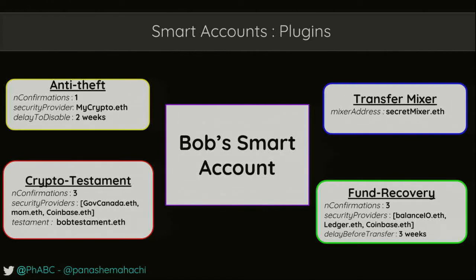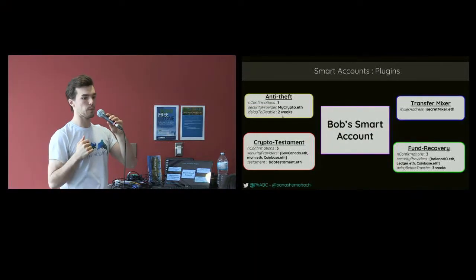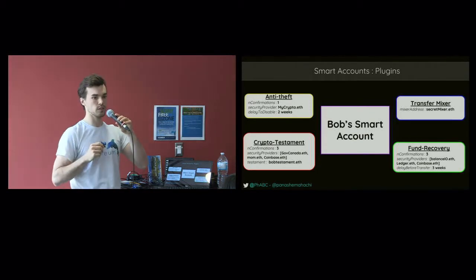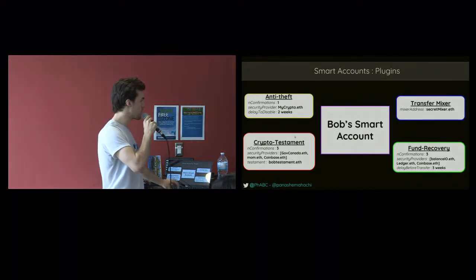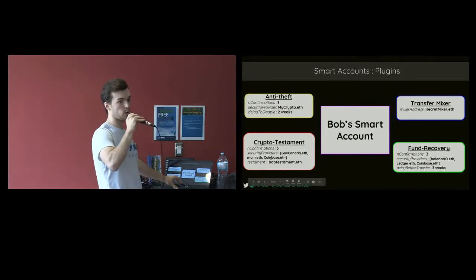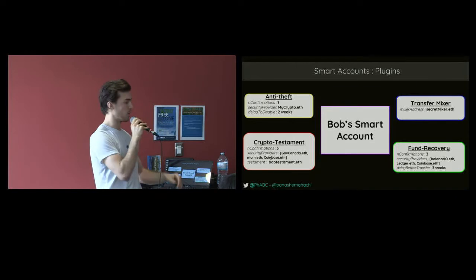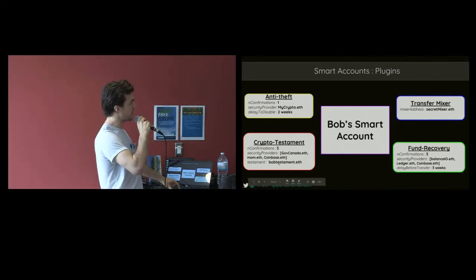Bob could say I want to have anti-theft protection. So I'm going to request that every transaction I have, no matter what key I'm using, even the highest level key clearance, I'm going to request a two-factor authentication from, for example, my crypto app. And if I want to disable this specific plugin, I'm going to need two weeks in order to do that. I also want to have a crypto testament — so when I create my smart account, I'm going to say here's what happens to my cryptocurrencies when I die. These tokens go to this address, these tokens go to this address, and my security providers are people that will attest that I died, similar to social recovery. The testament is at bobtestament.eth.